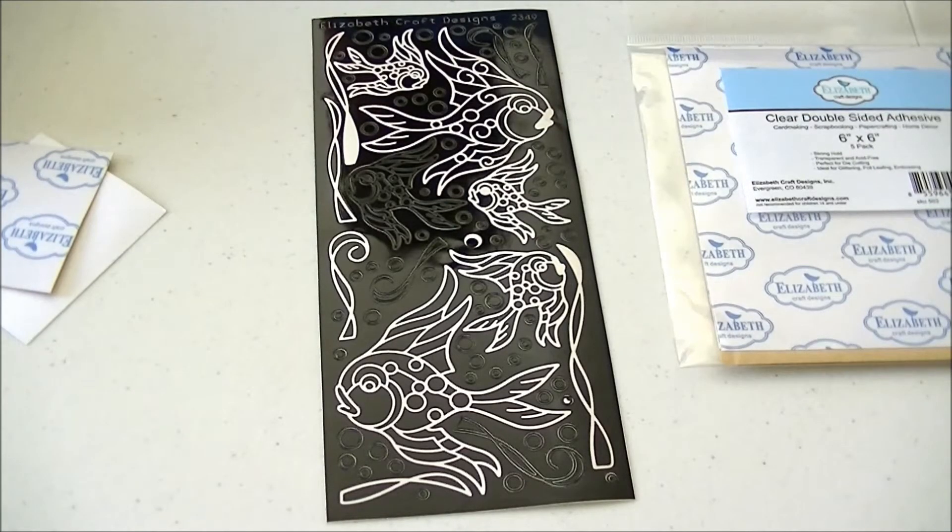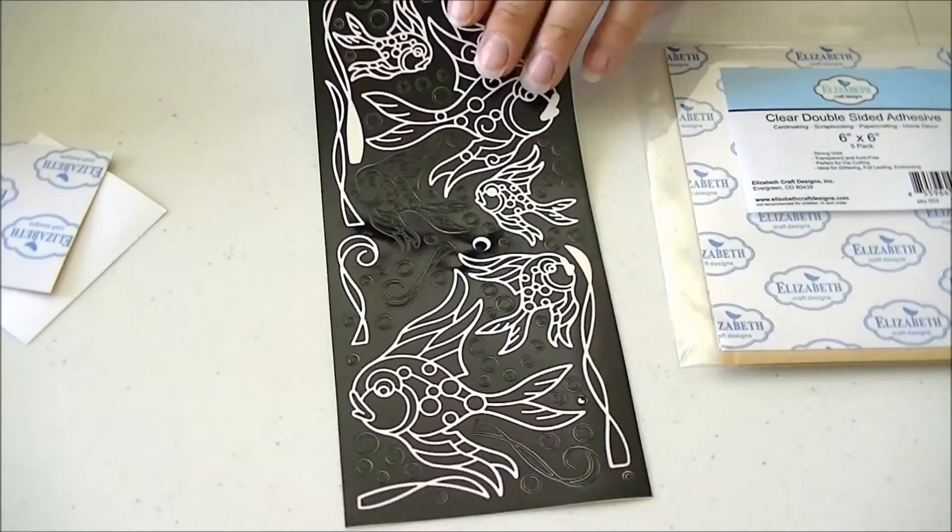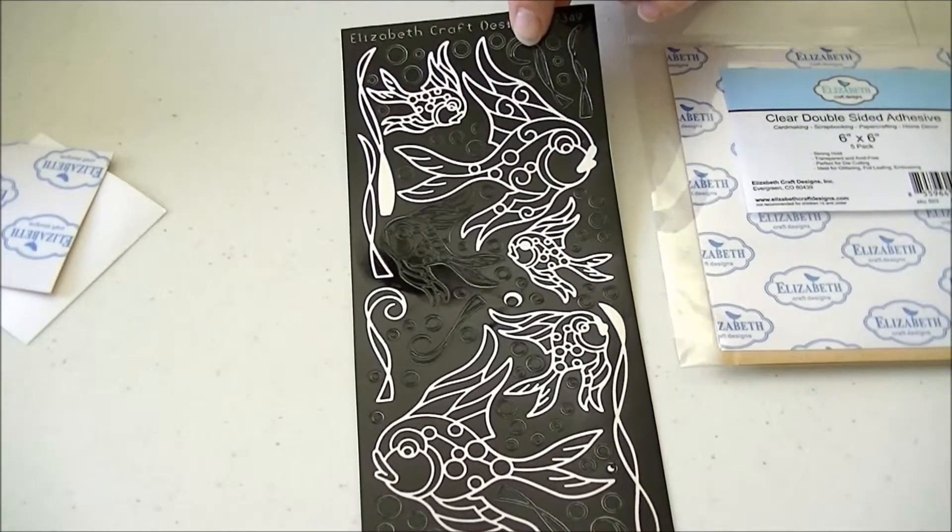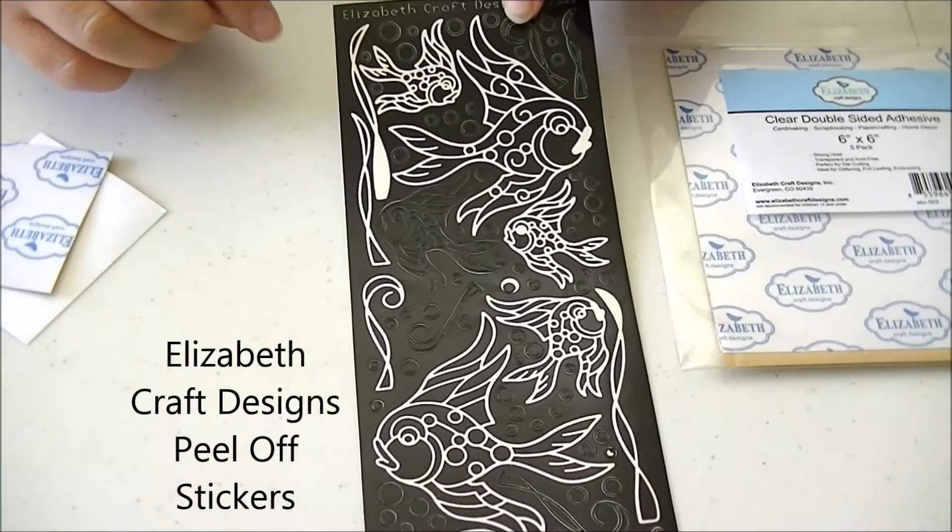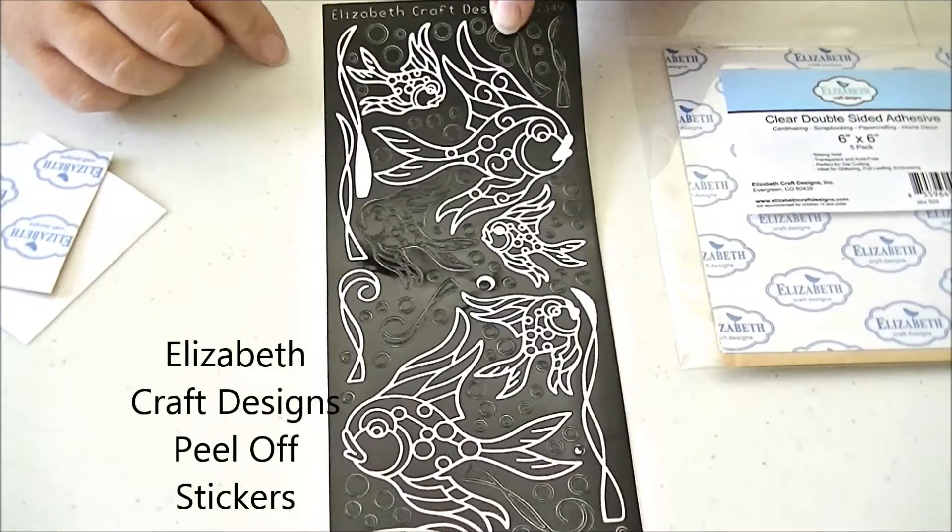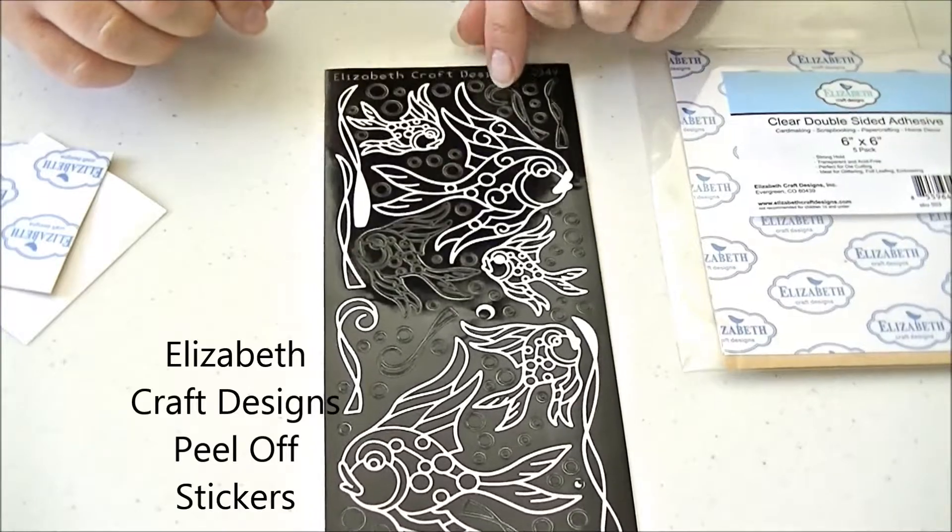Hi, I want to show you how easy it is to use a peel-off sticker from Elizabeth Craft Designs. These are thin outline stickers placed on cardstock with glitter that you can then color with alcohol ink markers.